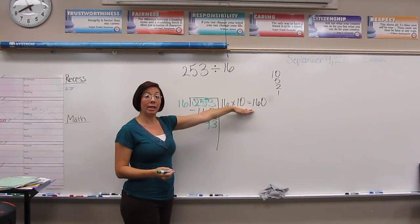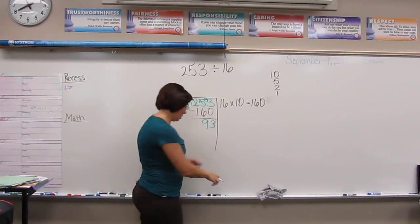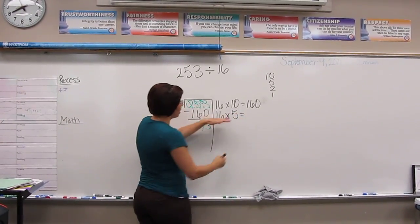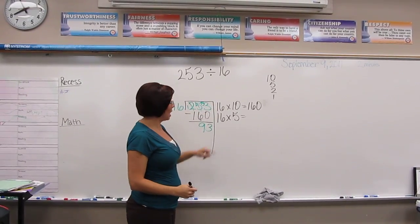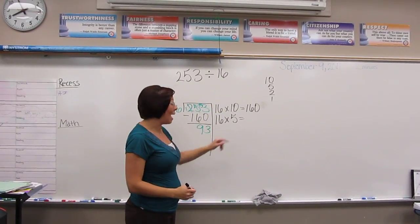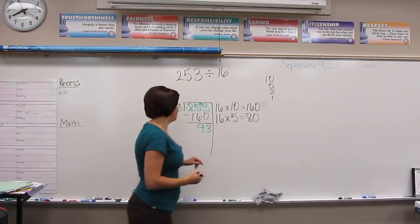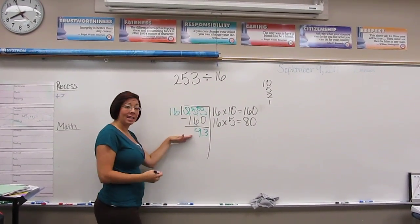Now I look at this and I see that I can't take out another 10. So what I do is I go to the next one down. 16 times 5. I know that if I keep my first number the same and reduce my second number by half, then my answer over here is reduced in half as well. 80. And I can take 80 out of here.